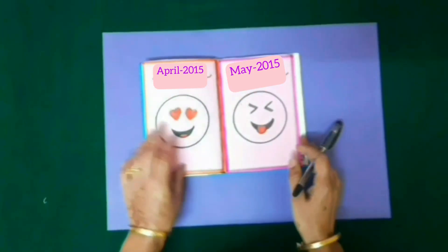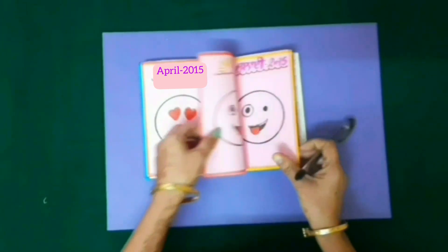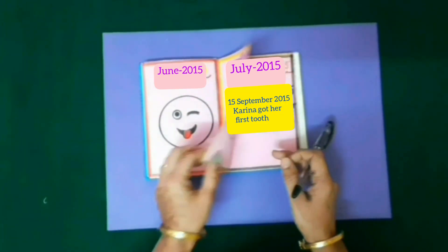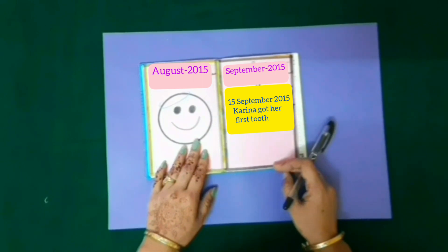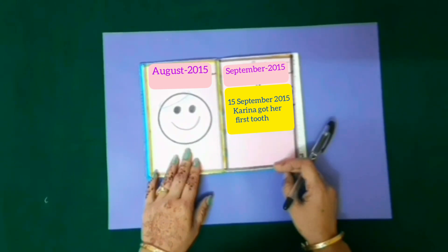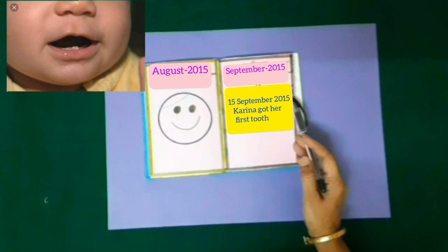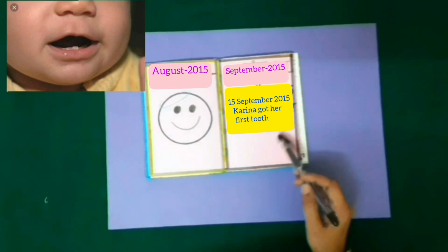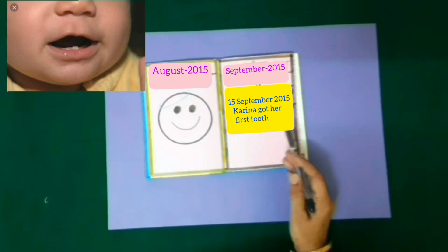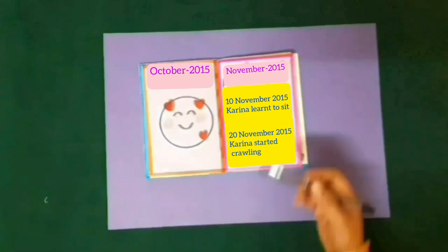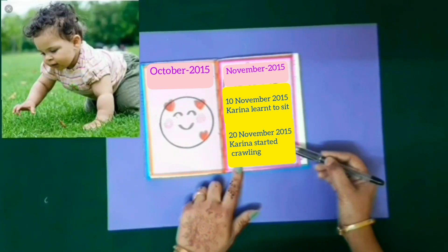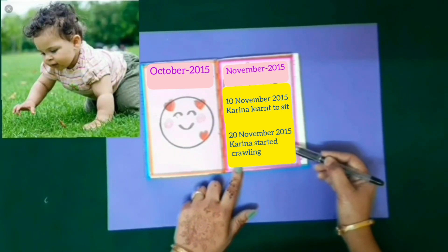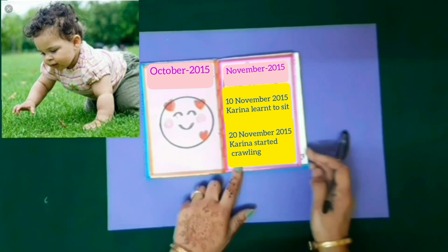Then students, months of April, May, June, July and August passed and she didn't note down any activity. Then on 15th September 2015, Rani wrote in her diary that Kareena got her first tooth. Then on 10th November 2015, Rani wrote that Kareena learned to sit. And on 20th November 2015, Kareena started crawling.